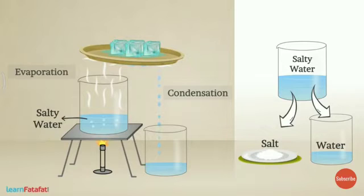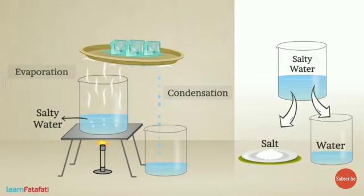To condense and cool the vapour fast, we took a plate just above the beaker of salty water and placed some ice cubes on that plate. The ice cubes help the vapour condense easily and transform back into water. So the process of conversion of vapour into liquid is condensation. Using both evaporation and condensation, we have separated salt and water separately.